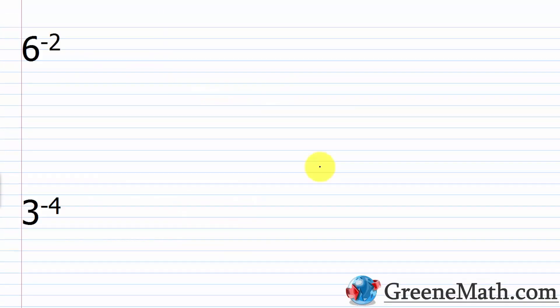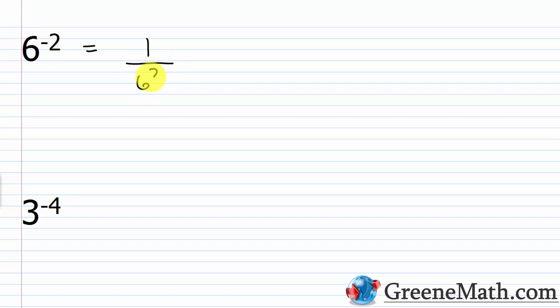Let's look at a few easy examples. We have six raised to the power of negative two. Take the reciprocal of the base six — that's one over six — and make the exponent positive. Right now it's negative two; it becomes just two. You can leave this as one over six squared, or say this is one over 36. Both answers are correct.